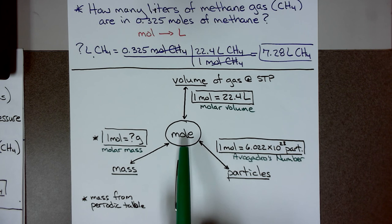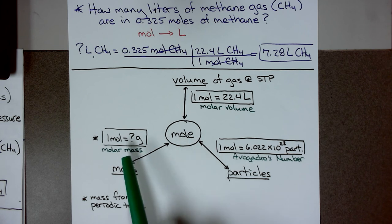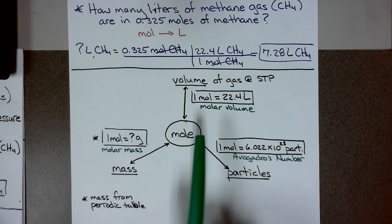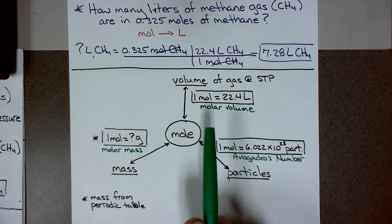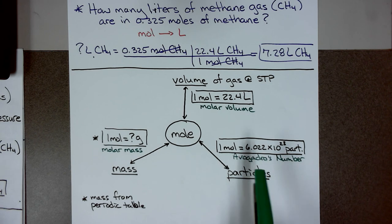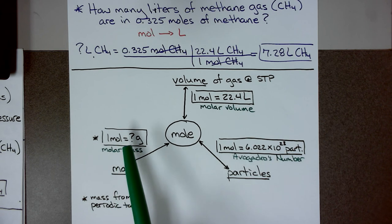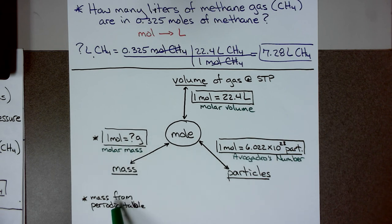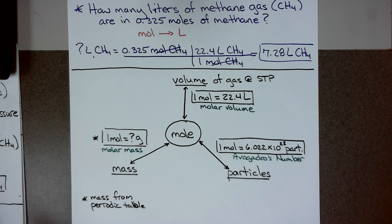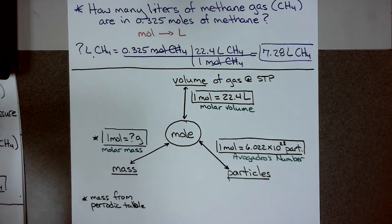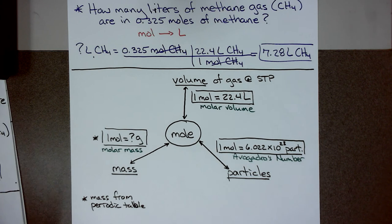Your conversion factors are molar mass, molar volume, and Avogadro's number. You have to memorize Avogadro's number and molar volume for the test, but you can't memorize the molar mass — you have to use the periodic table to determine that. And that is all for this video on mole and mole conversions.